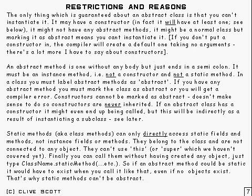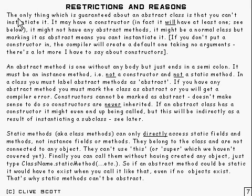Now it's time to say a few words about abstract classes and what you can and you can't do with them. First of all, the only thing which is absolutely guaranteed about an abstract class is that you can't instantiate it. That means you can't do 'new' followed by the class name and expect to construct an object of that class, because you're not allowed to.